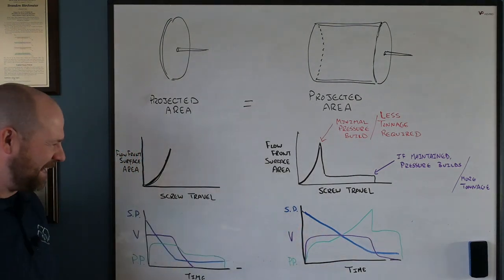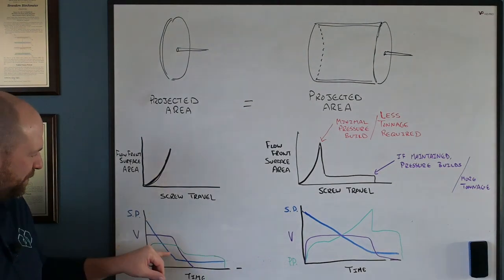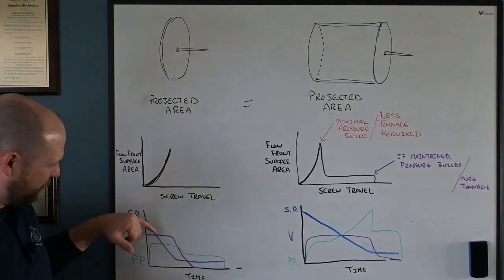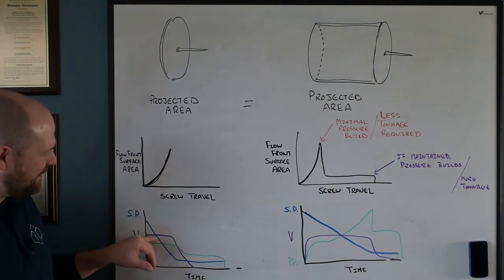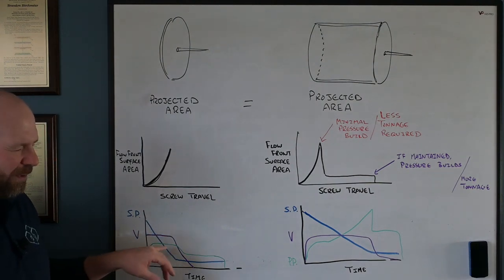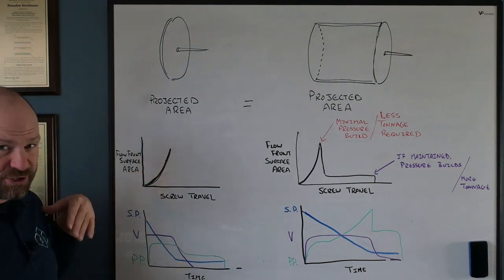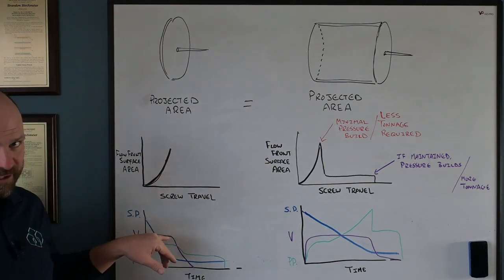What I've drawn up here is what your injection molding graph would look like. Blue being screw position. As I'm moving the flow front forward, screw position decreases to achieve tonnage. I'm using a constant velocity here. Then I'm predicting what my plastic pressure would do in this scenario. What's happening is I'm not building a lot of pressure because this flow front surface area is growing exponentially. I don't build a lot of pressure at a constant velocity in this scenario.